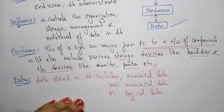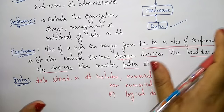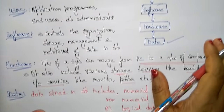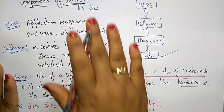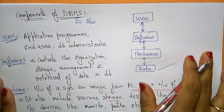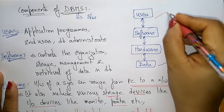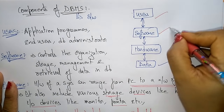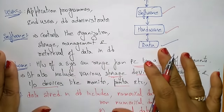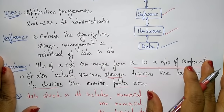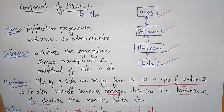So these are the different components present in a database management system: users, software, hardware, and data. Thank you.